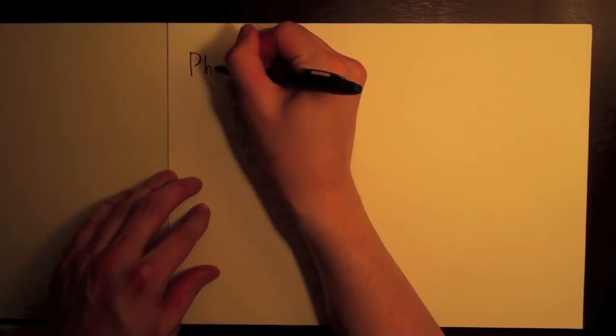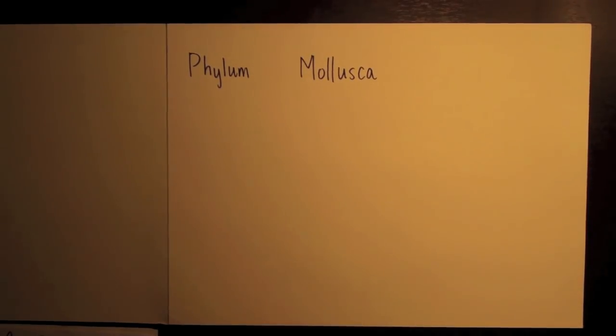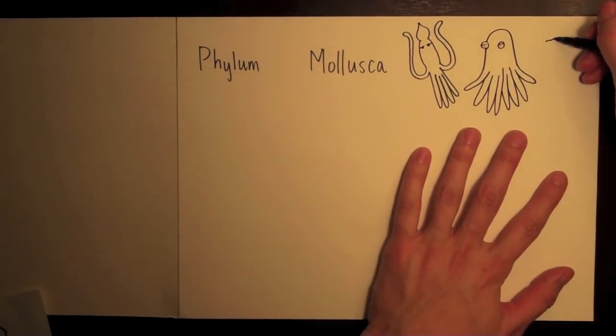Nudibranchs are mollusks, classified in the phylum mollusca, the same group that other soft-bodied animals, including squids, octopi, and oysters, occupy.